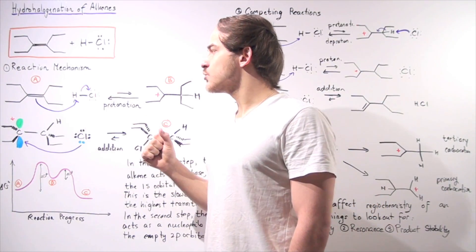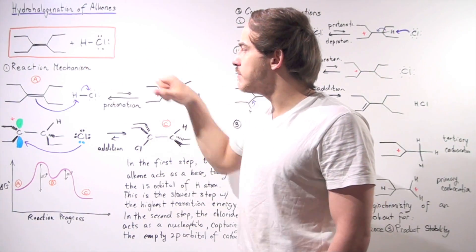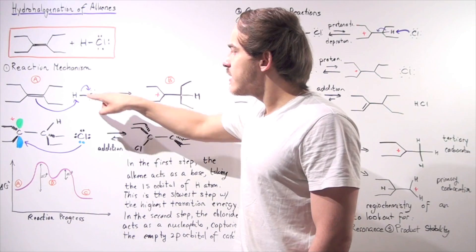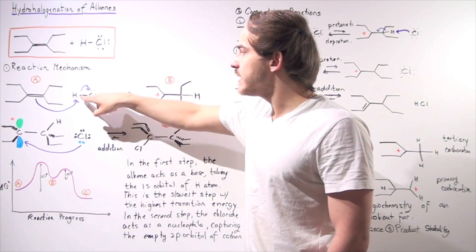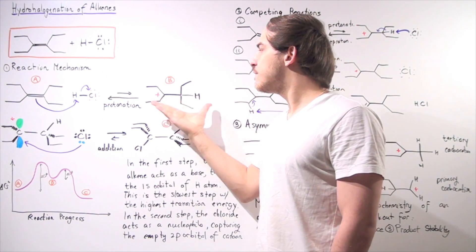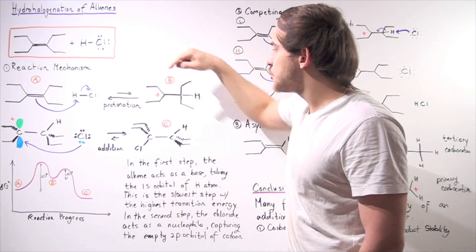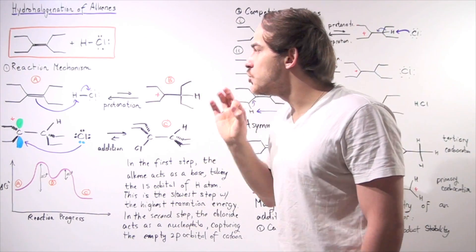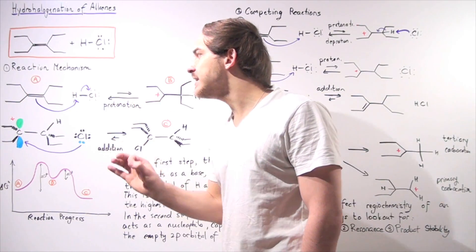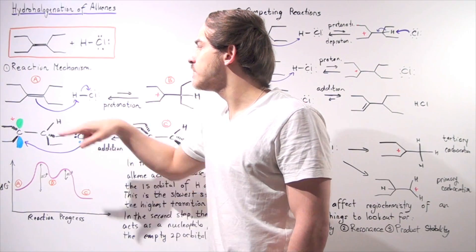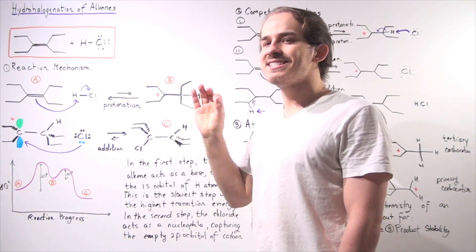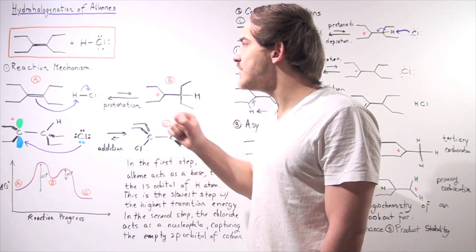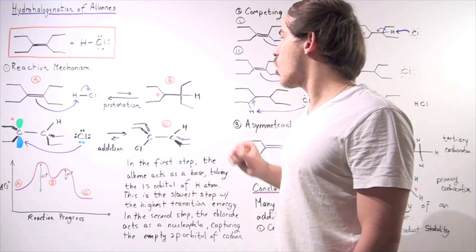We begin with our two reactants: we have our pi bond on the alkene and the HCl molecule. The pi bond — the pair of electrons found in the pi bond — can act as a base, taking the empty 1s orbital of the H atom, leaving the two electrons on the chlorine. We produce the following carbocation intermediate, with a positive charge on this carbon — a tertiary structure — and our H atom went onto this carbon. This is the protonation step: the addition of the H atom onto our double bond to form the carbocation intermediate.